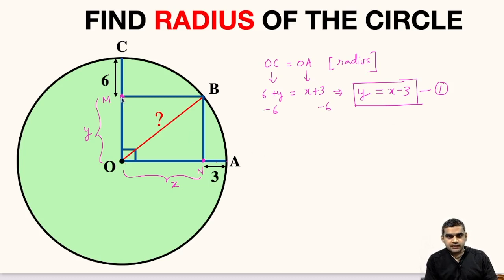Now, if this distance M to O is Y, so B to N will also be equal to Y, which in turn is equal to X minus 3. Now, let us see triangle O, N, B, which is a right angle triangle.